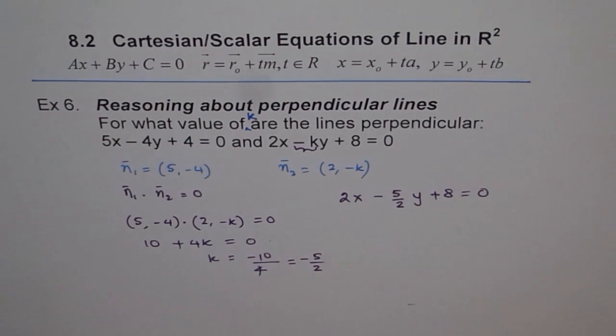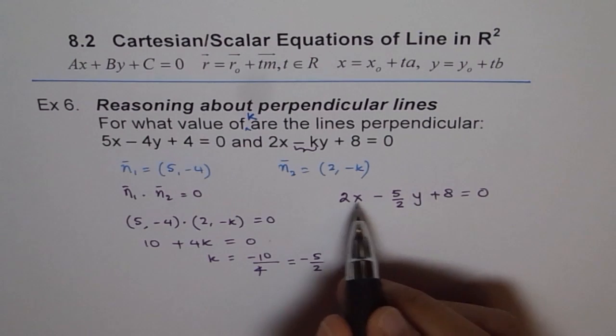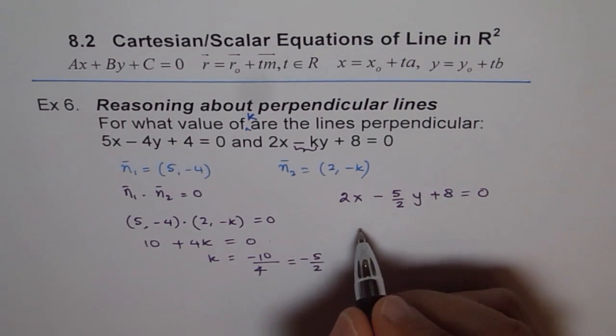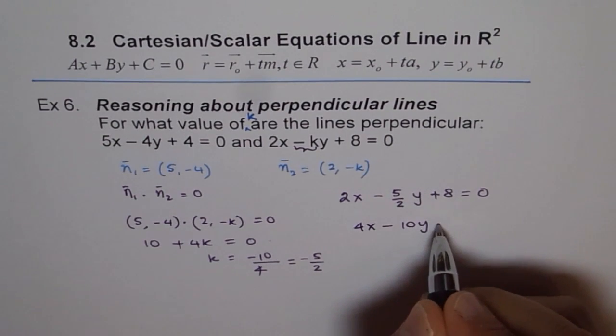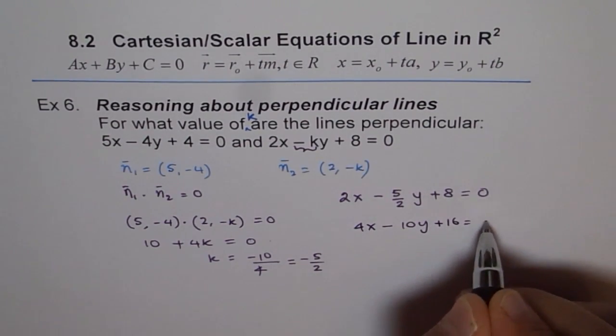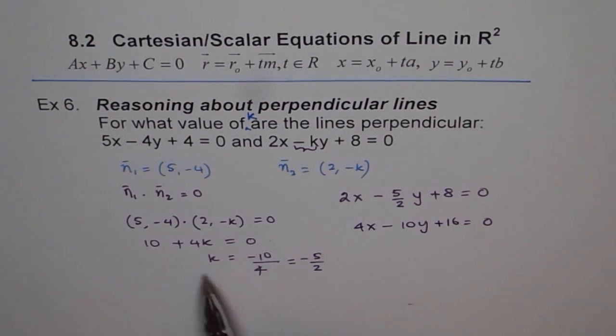So this could be written as, we could just multiply everything by 2, then the equation becomes 4x minus 10y plus 16 equals to 0. Anyway, k is minus 5 over 2.